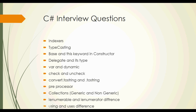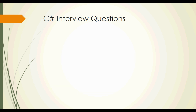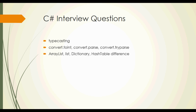IEnumerable and IEnumerator difference — why we need to use IEnumerator interface and IEnumerable interface. Using and usage difference. Type casting — Convert.ToInt, Convert.Parse, and Convert.TryParse. ArrayList, List, Dictionary, Hashtable — generic and non-generic types of collections. Properties and foreach loop — where we need to use them.